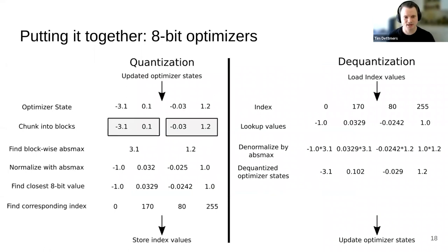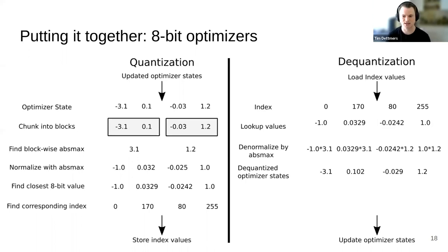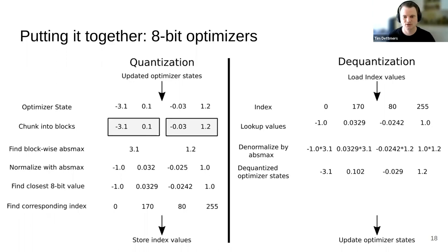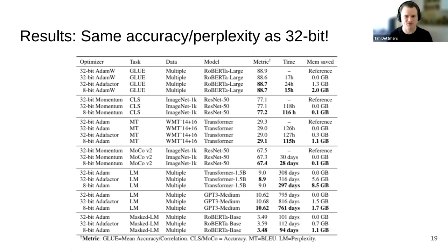Putting everything together with these blocks: to quantize an optimizer state, you chunk it into blocks, find the absolute maximum value, normalize by it, find the closest 8-bit value using the dynamic exponent data type, then store the index. To de-quantize, you reverse the steps — take the index values, undo the block-wise normalization — and then you have the optimizer states to update again. You repeat this loop, and with that you have a very compact 8-bit optimizer that is as good as a 32-bit optimizer.